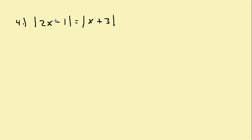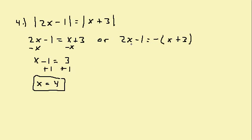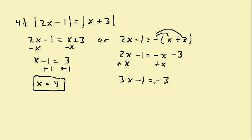For this one there's an absolute value on both sides. I set up two equations: 2x minus 1 equals x plus 3, or 2x minus 1 equals negative (x plus 3). Solving the first: subtract x to get x minus 1 equals 3, so x equals 4. For the second, distributing gives 2x minus 1 equals negative x minus 3, add x to get 3x minus 1 equals negative 3, add 1 to get 3x equals negative 2, so x equals negative 2/3.